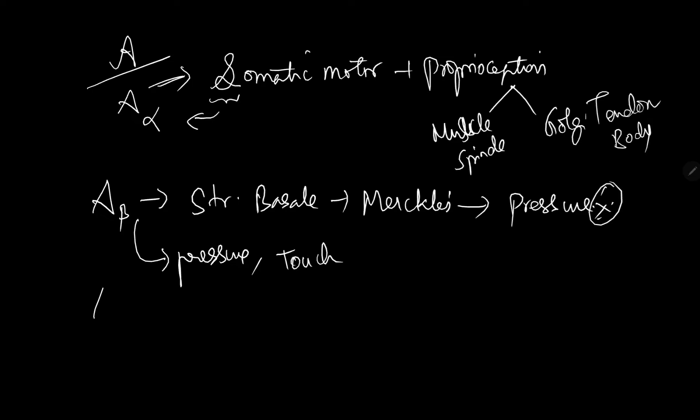Next is A-gamma. When we write two lines or put two lines beside this gamma symbol, it becomes an M, and thereby it is motor to muscles.